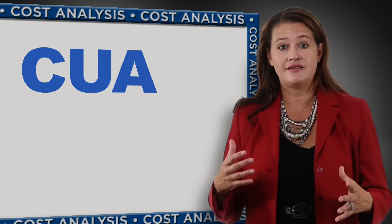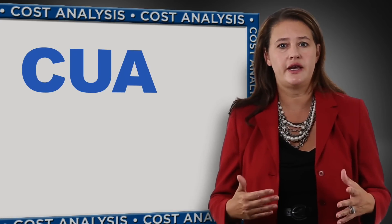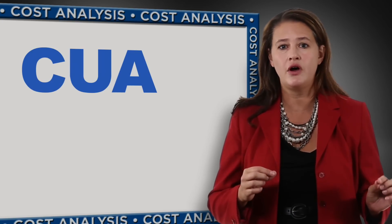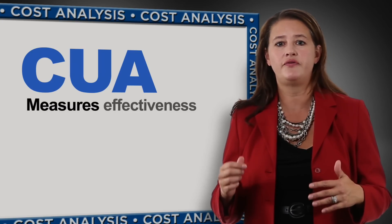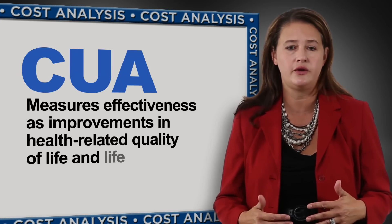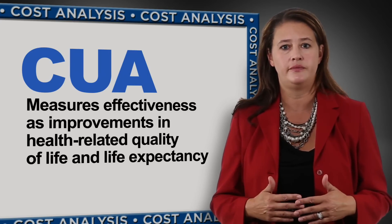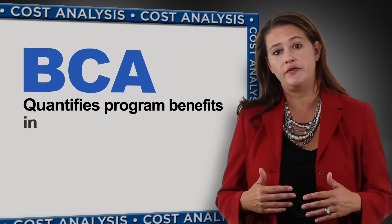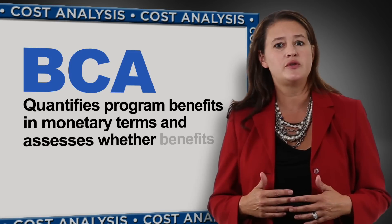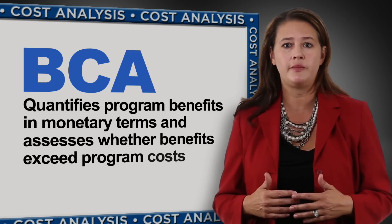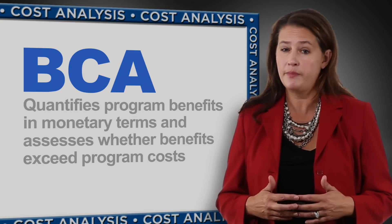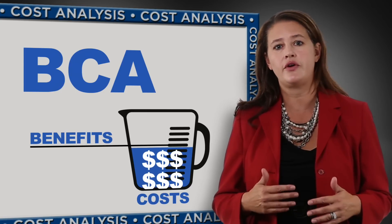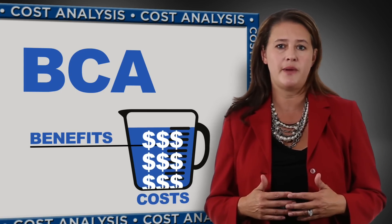There is also a type of analysis called cost-utility analysis. This is a sub-variant of cost-effectiveness analysis, which compares programs on their costs but measures effectiveness in terms of improvements in health-related quality of life and in survival. Benefit-cost analysis quantifies program benefits in monetary terms and assesses whether those benefits exceed the program cost, enabling comparison between programs with different types of effects and whether the cost of the program exceeds the benefits on a monetary level.